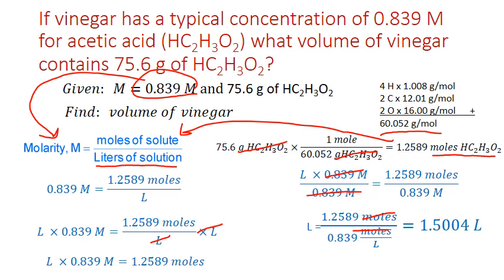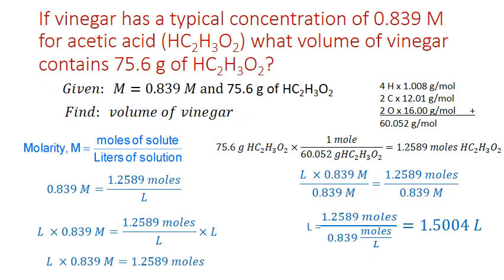Technically dividing by moles per liter gives 1 over 1 over liters, but taking the reciprocal brings the liters back to the numerator, so our final unit is liters. The calculated value is 1.5004. Looking back at the original numbers, both molarity and mass have three significant figures, so we round to three significant figures — the first zero — and since it's followed by another zero we don't round up, giving a final answer of 1.50 liters of vinegar.